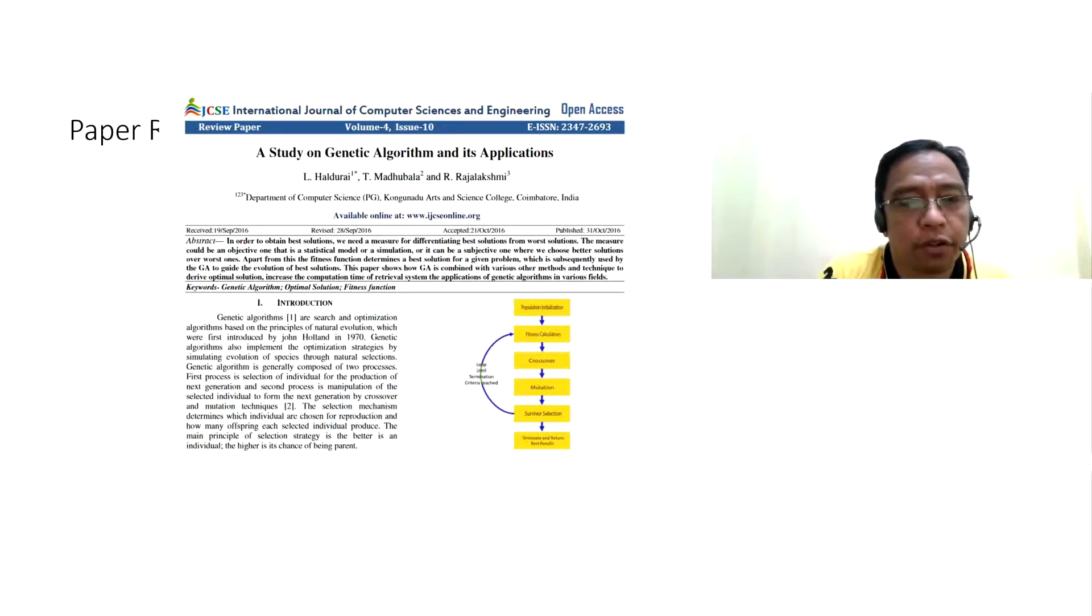For the abstract, in order to obtain best solutions, we need a measure for differentiating best solutions from worst solutions. The measure could be an objective one, a statistical model or a simulation, or it can be subjective where we choose better solutions over worse ones. Apart from this, the fitness function determines the best solution for the given problem, which is subsequently used by the GA to guide the evolution of best solutions. The paper shows how GA is combined with various other methods and techniques to derive optimal solutions, increase computation time, and the applications of genetic algorithm in various fields.